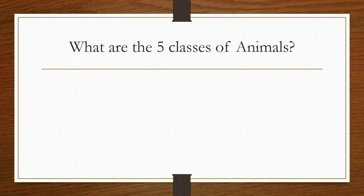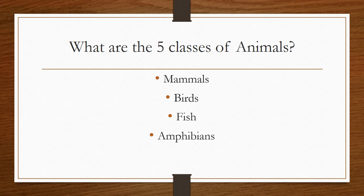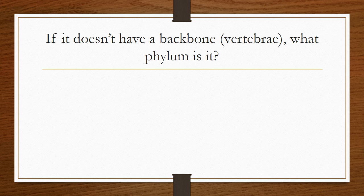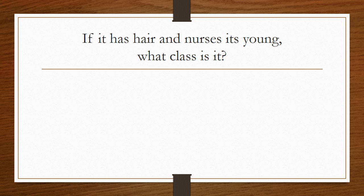There are five classes of vertebrates in Kingdom Animalia. I'm going to give you a one or two word clue for each, and you tell me what class it is. Fur — mammals. Feathers — birds. Fins — fish. Metamorphosis — amphibians. Scaled skin — reptiles. And the final one is animals without a backbone. These fall into the phylum of invertebrates. Kingdom Animalia is divided into two phyla: backboned animals divided into those five classes, and animals without backbones. What do you call an animal without a backbone? An invertebrate.